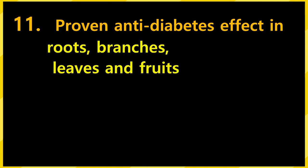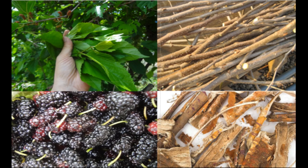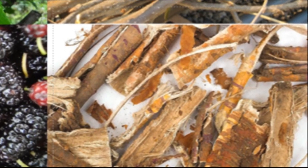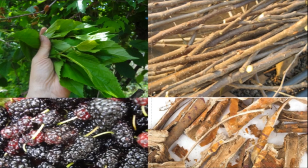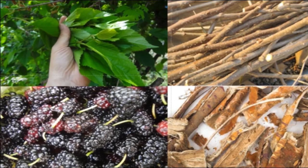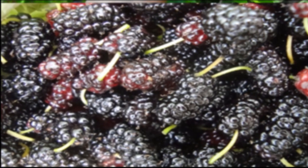Finally, the 11th plant. This plant's roots, branches, leaves, and fruits all have a proven anti-diabetic effect — a great anti-diabetic plant. It is not only a medicinal plant but also an edible plant, and the leaves and fruits are very tasty. What is the name of this tree? It is Morus alba — the mulberry tree. I have previously recommended two good trees to grow on my YouTube channel: the first is Eleutherococcus senticosus, and the second was the mulberry tree. It has a special advantage — it is delicious to eat, and the whole plant has anti-diabetic effects, so I added it as the 11th.